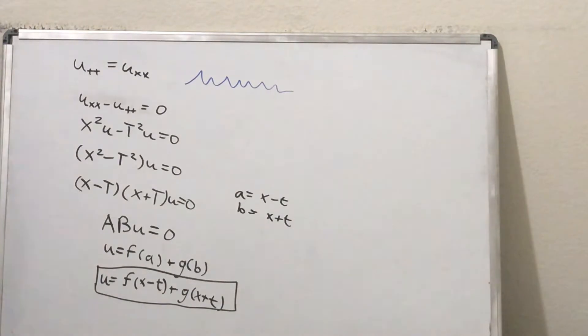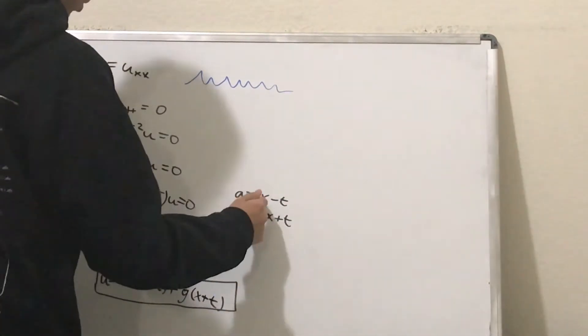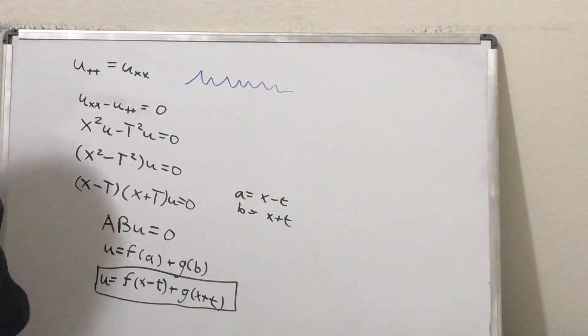And now you can go ahead and do a nice little variable: a, which is x minus t, and b, which is x plus t. And now you have this equation, ∂a∂b u equals 0.